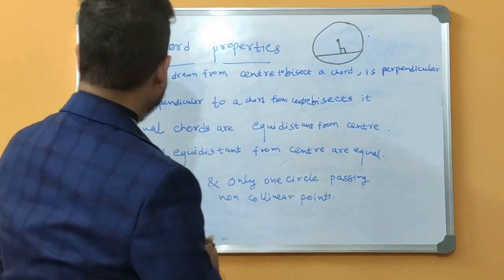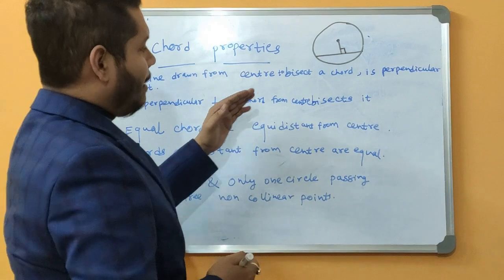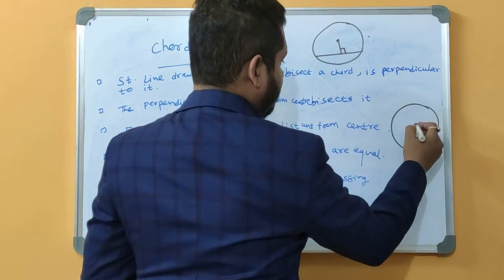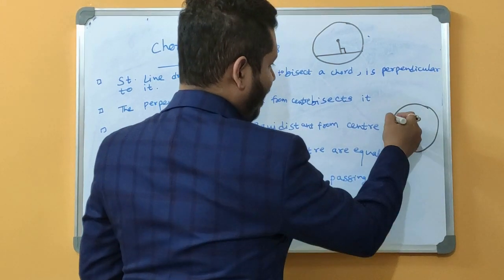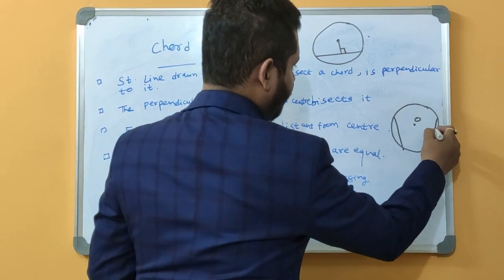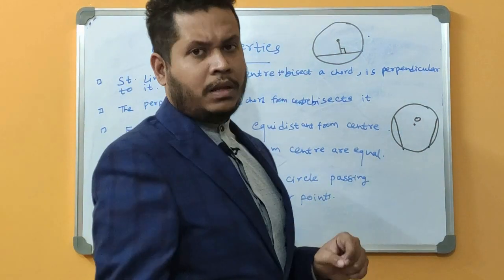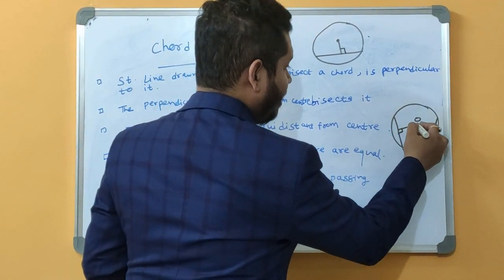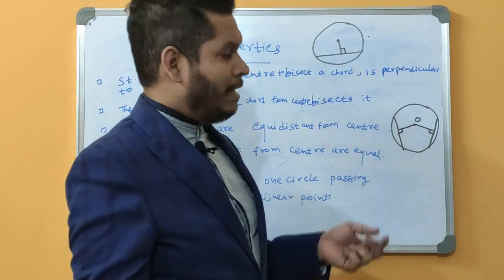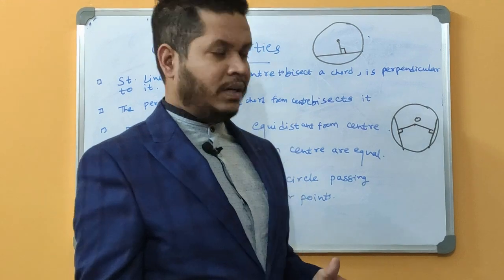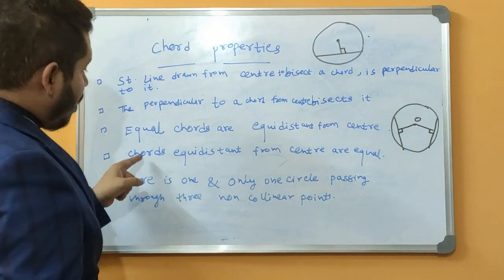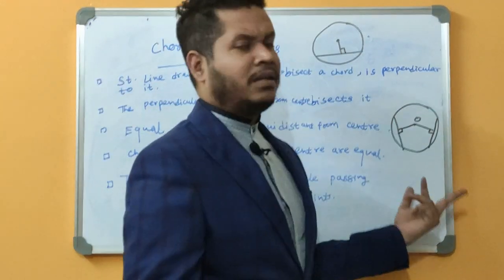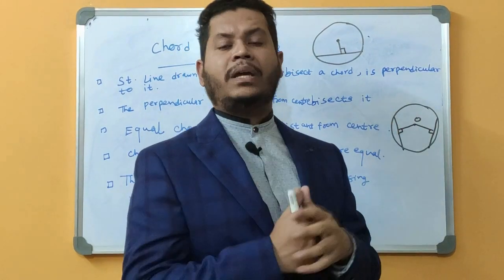The third property states that equal chords are equidistant from the centre. So if we have a circle with a centre and two chords of equal length drawn anywhere, their perpendicular distances from the centre will be equal. The fourth property is the converse: chords equidistant from the centre are equal. So if any two chords are equidistant from the centre, they must be equal in length.